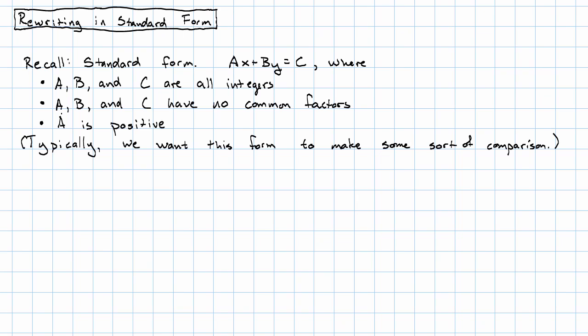Let's see how to get this form. I'm going to give you an example that breaks all of the rules. So I'm going to start with an equation in the form a number times x plus a number times y equals a third number. But right now, none of the numbers are integers.